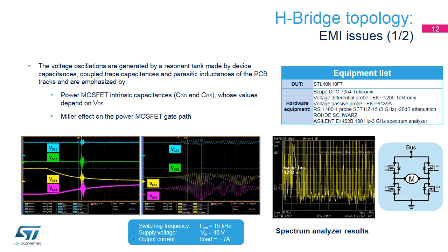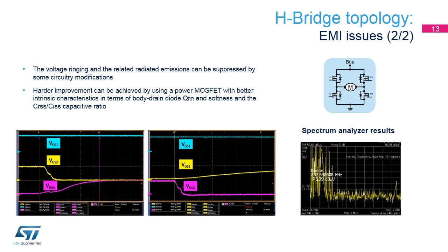The voltage oscillations are generally induced by power MOSFET intrinsic capacitances, whose values depend on VDS, the Miller effect on the MOSFET, and parasitic capacitances and inductances of schematic tracks in the PCB layout.